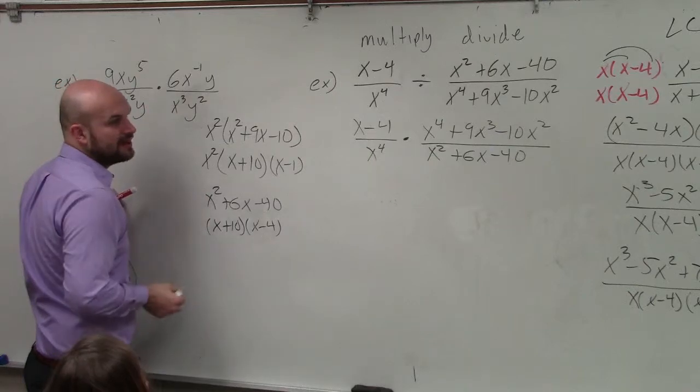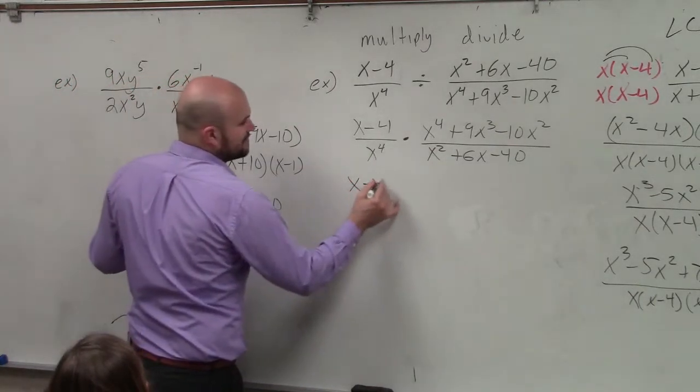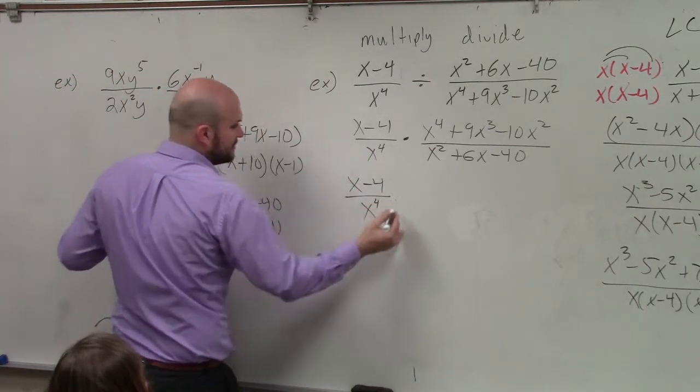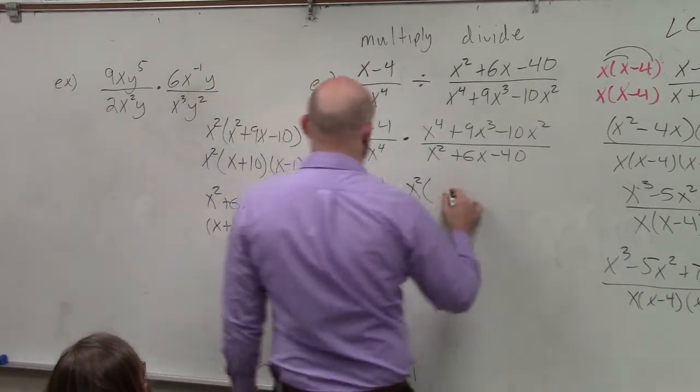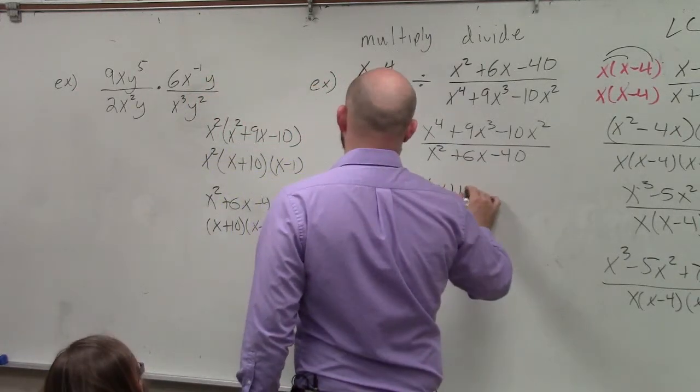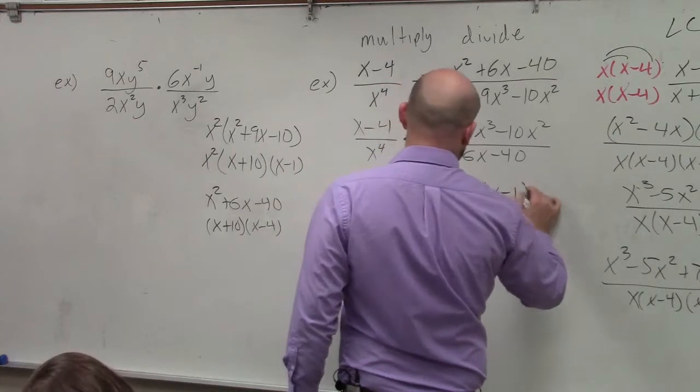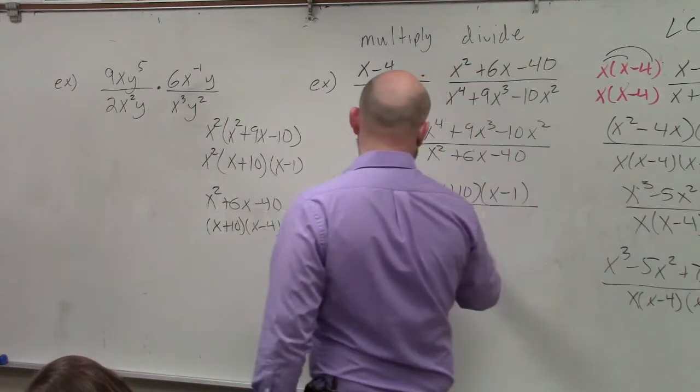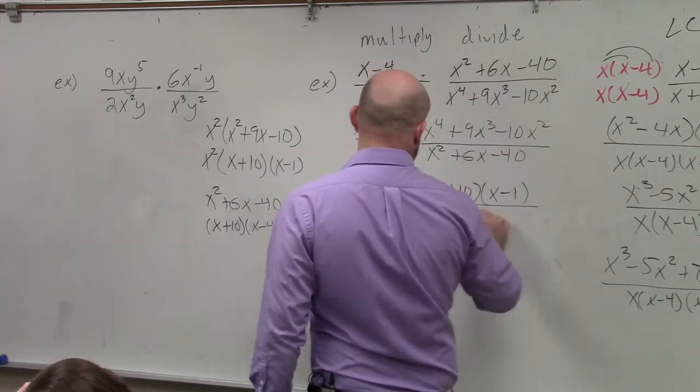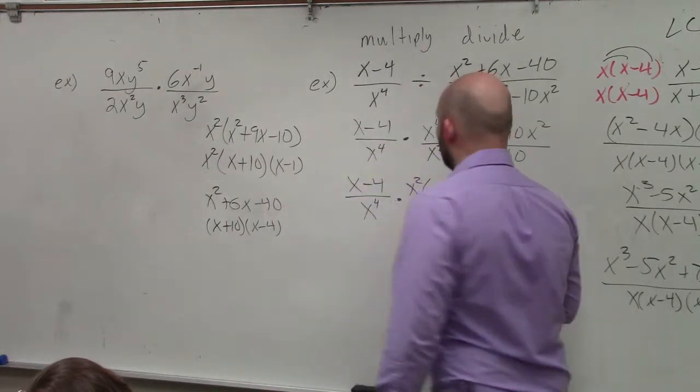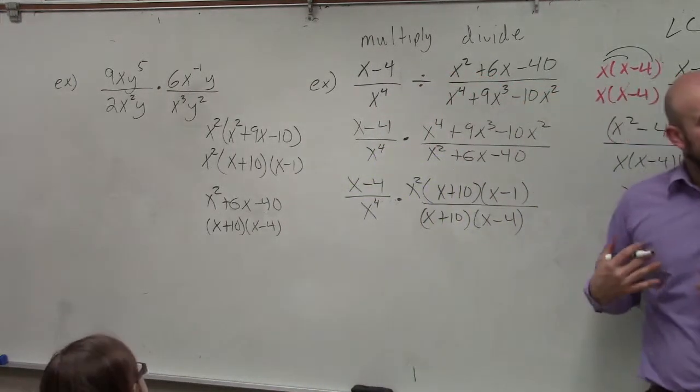So now let's just write in our factored forms. x minus 4 over x to the fourth times x squared times x plus 10, times x minus 1, all over x plus 10, times x minus 4. And I like writing everything out when it's factored.